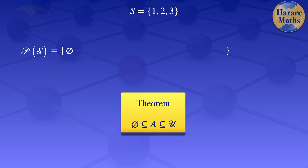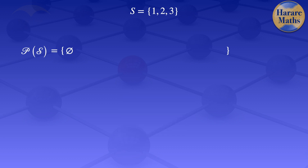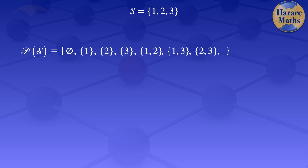We will now go on and look at the other subsets and the other elements. We have the set containing element 1, the set containing element 2, the set containing element 3, the set containing elements 1 and 2, the set containing elements 1 and 3, and the set containing elements 2 and 3.